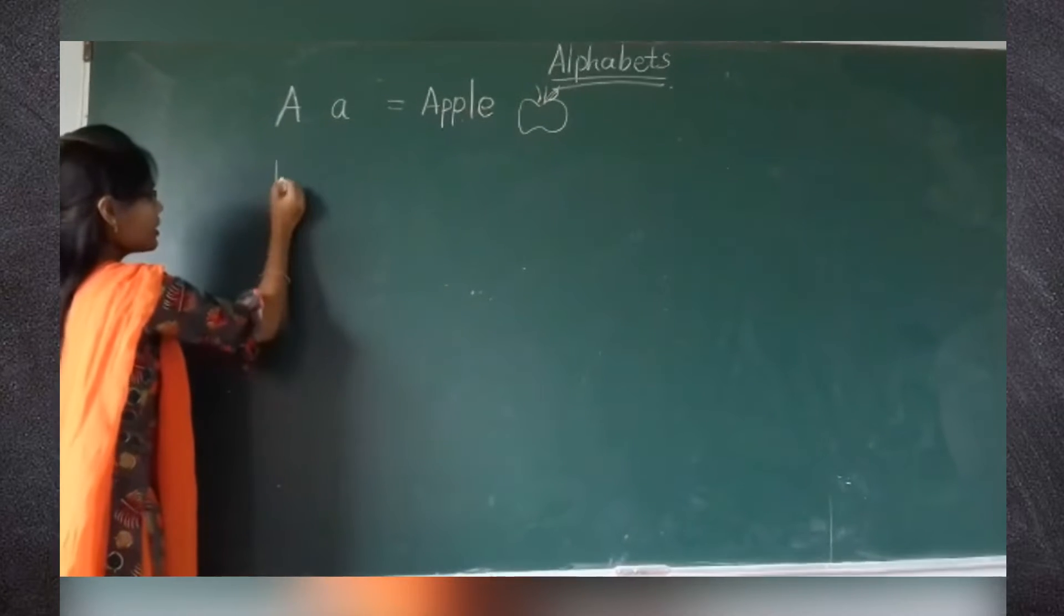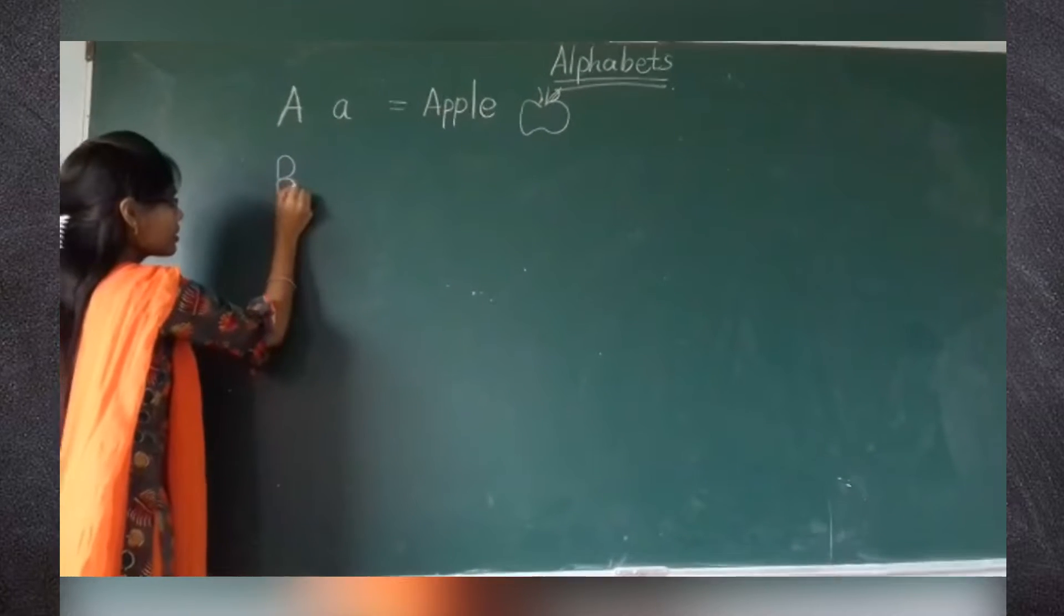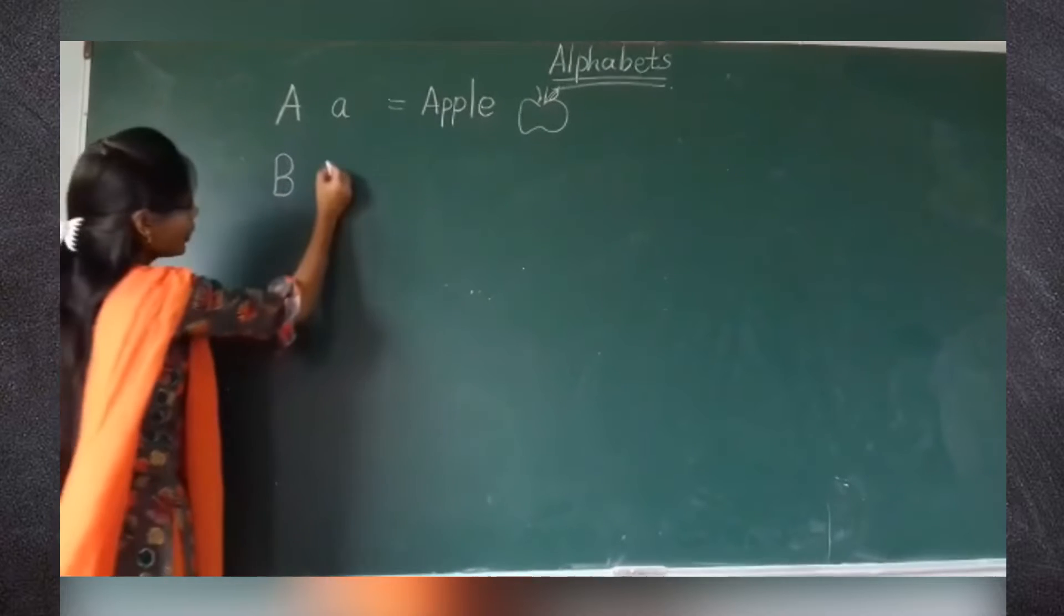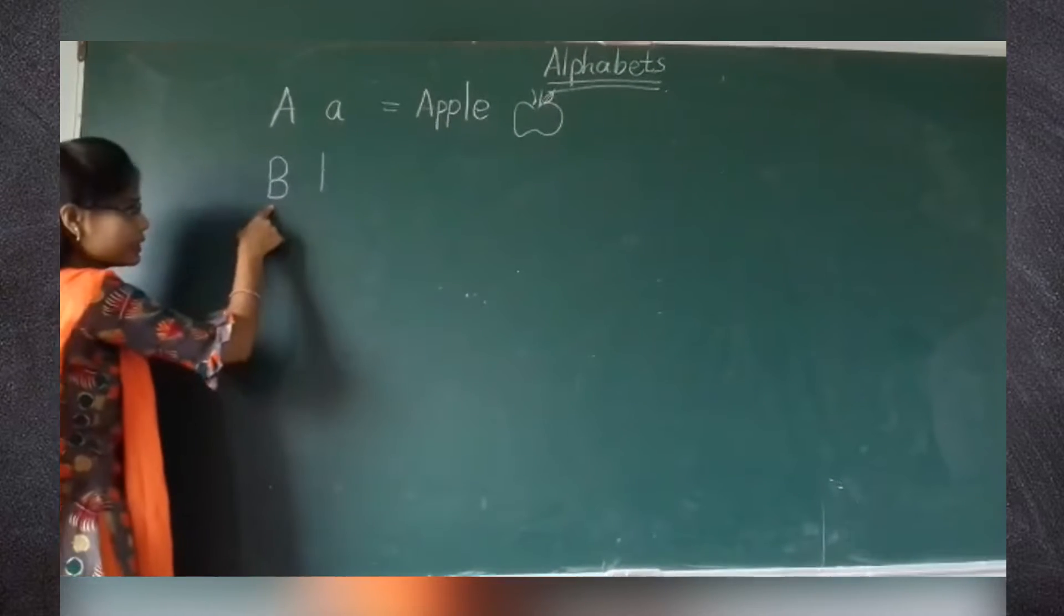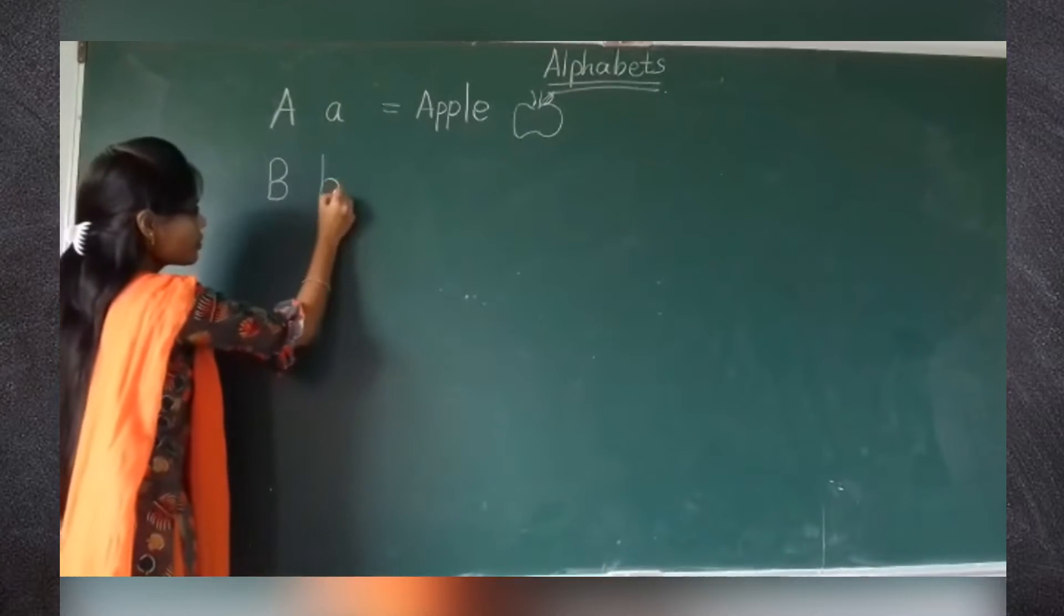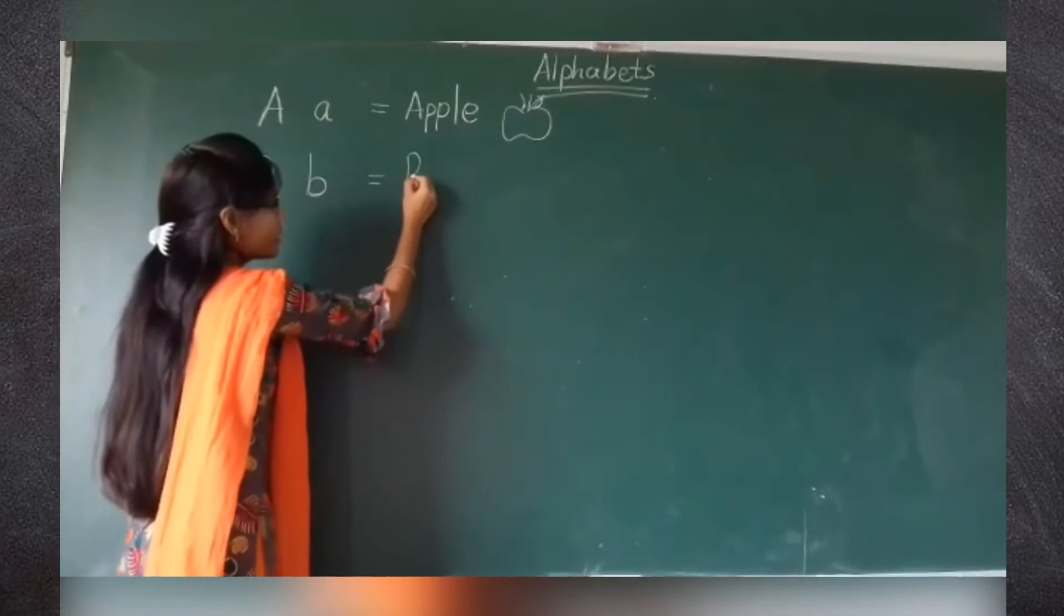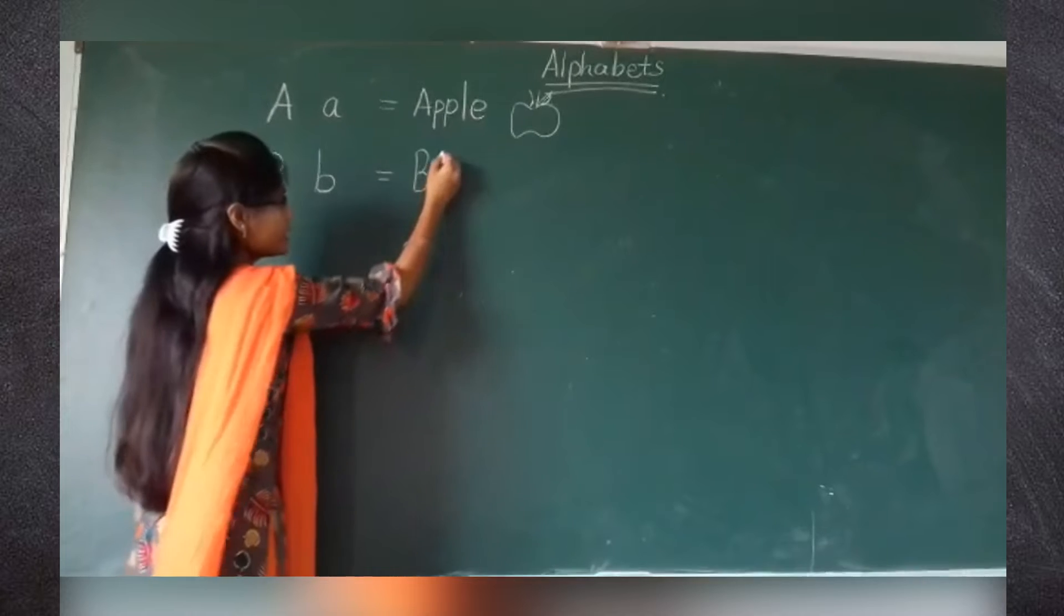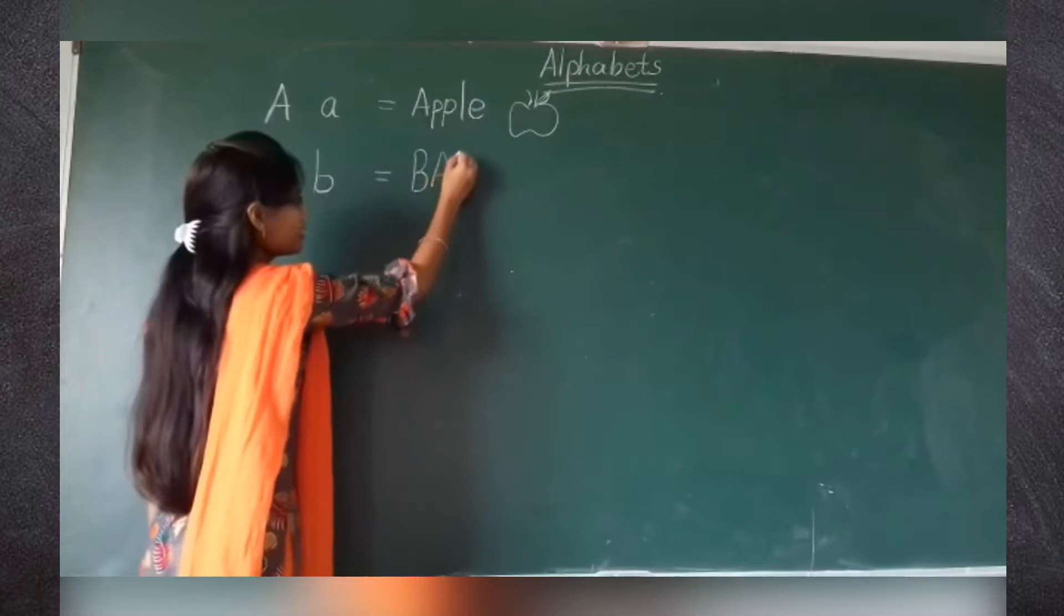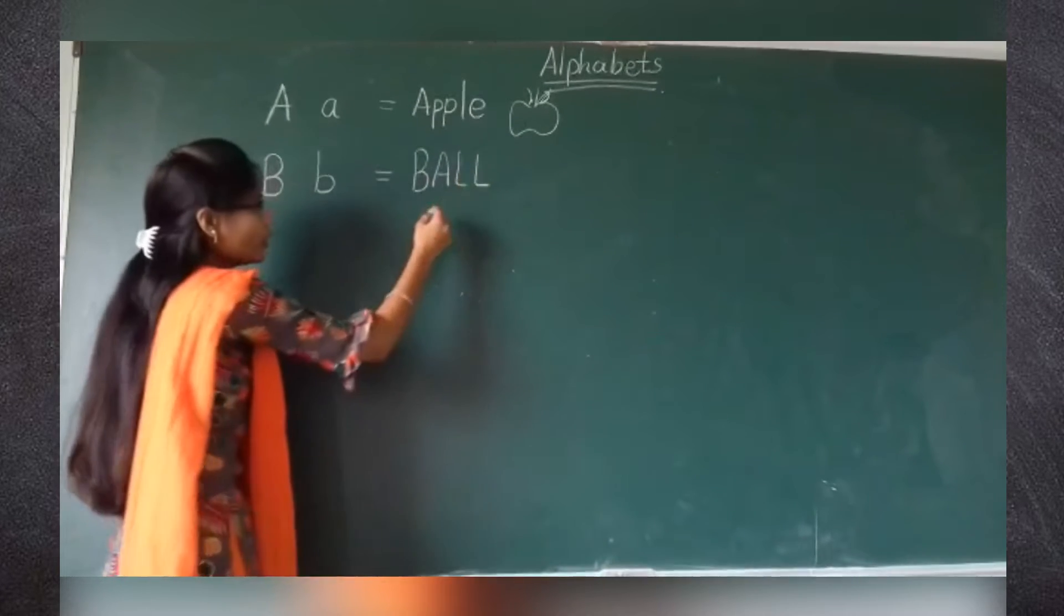Now B. B for ball. This is capital B and this is small b. B for ball. Spelling of ball is B-A-L-L. Ball.